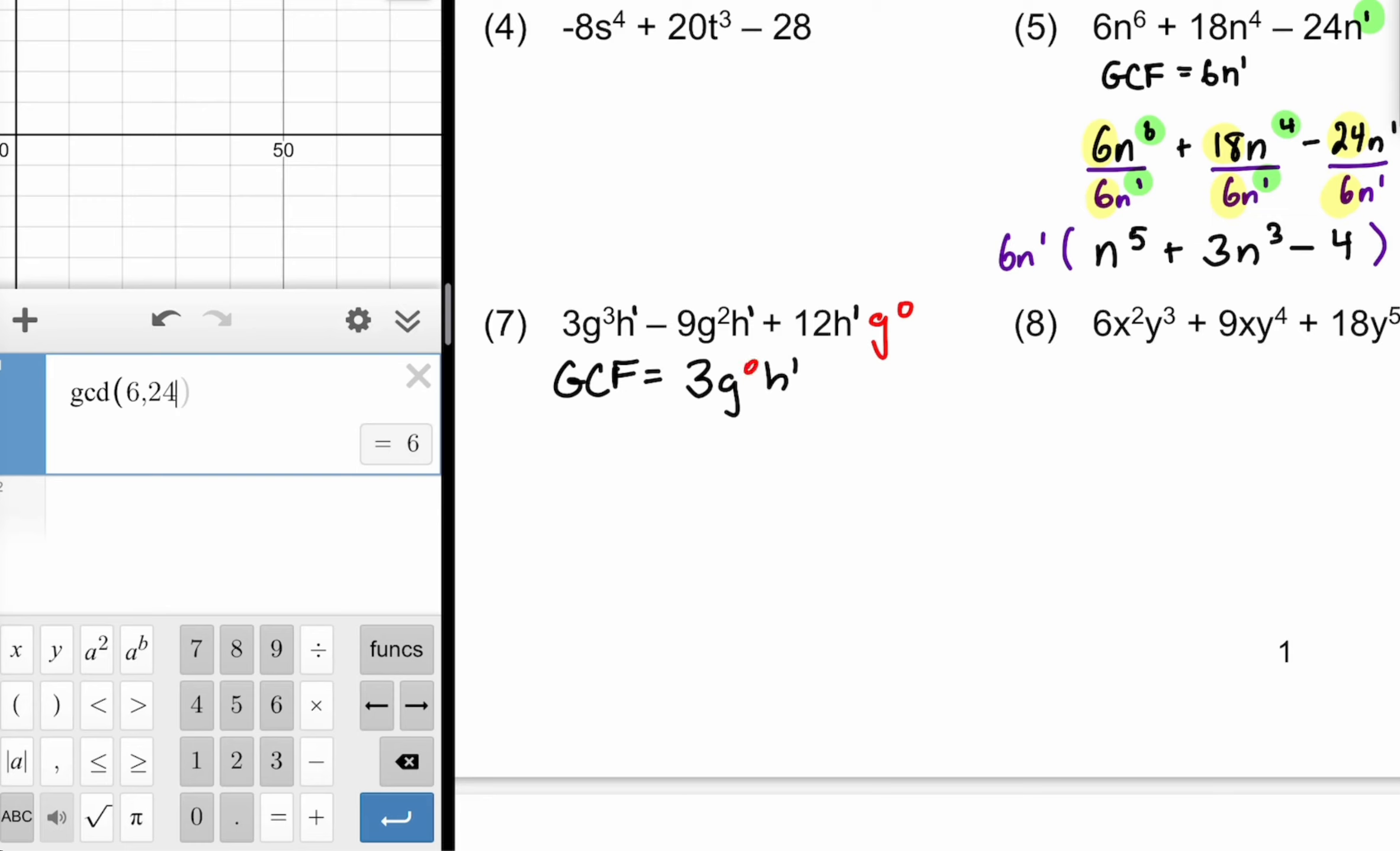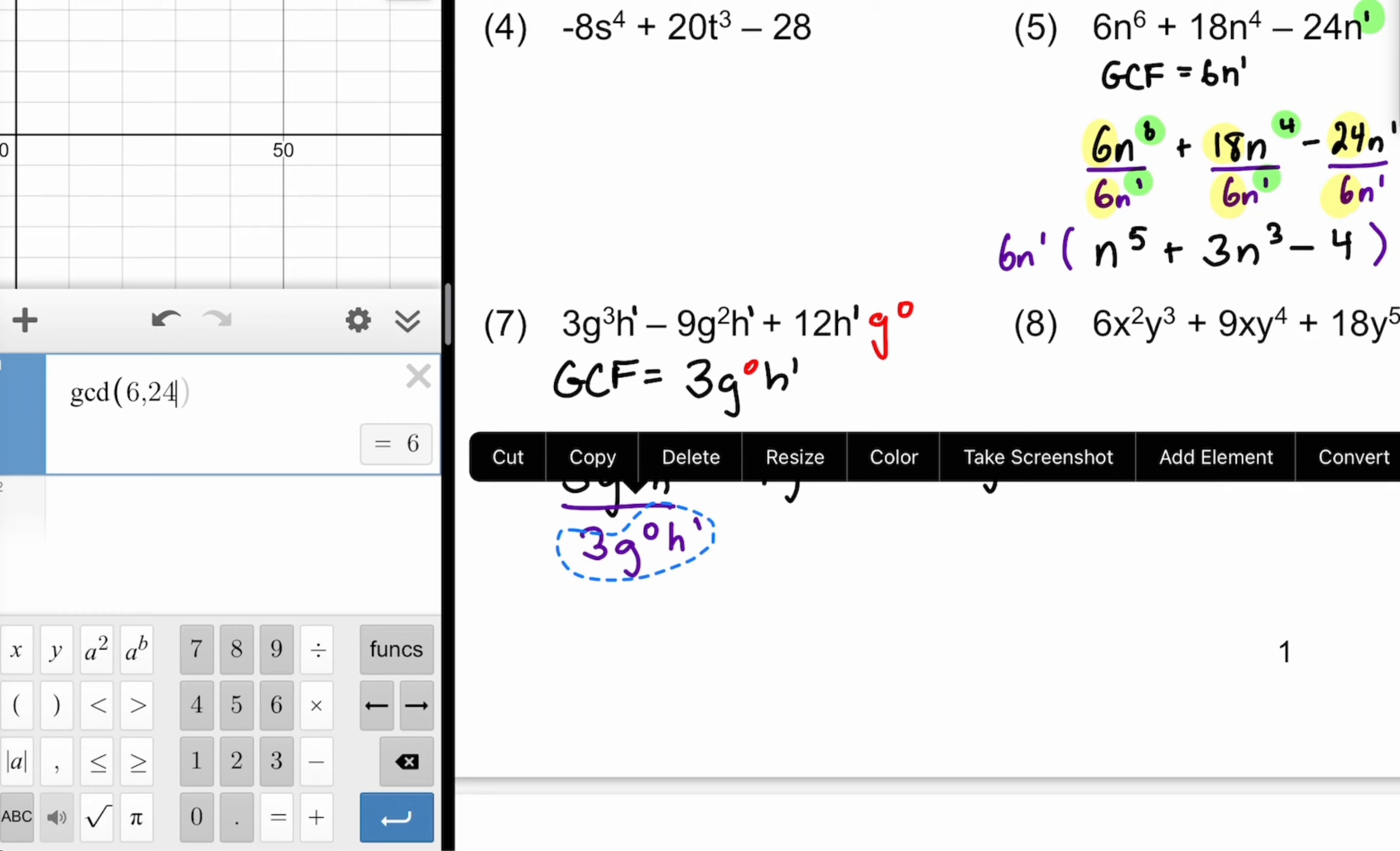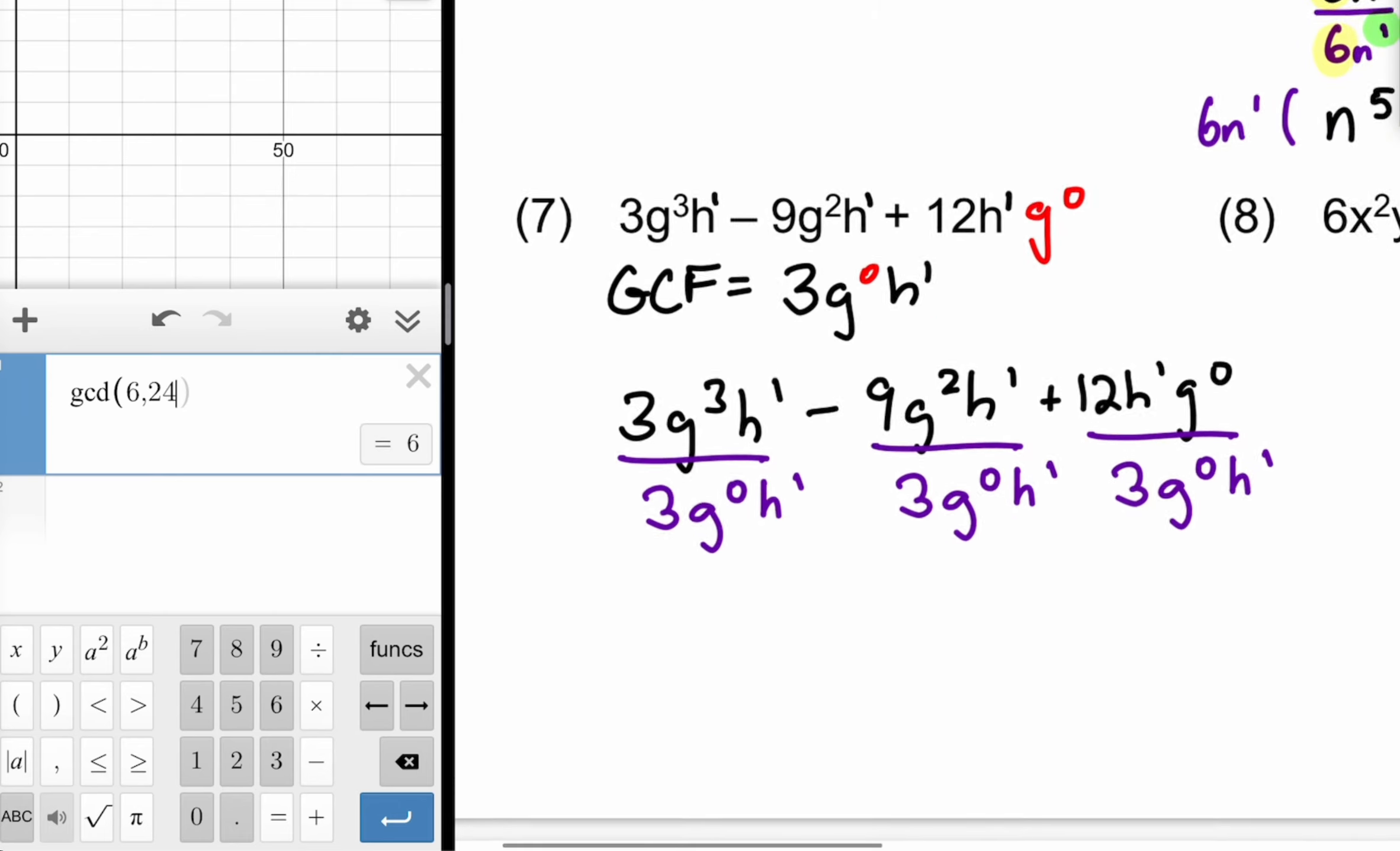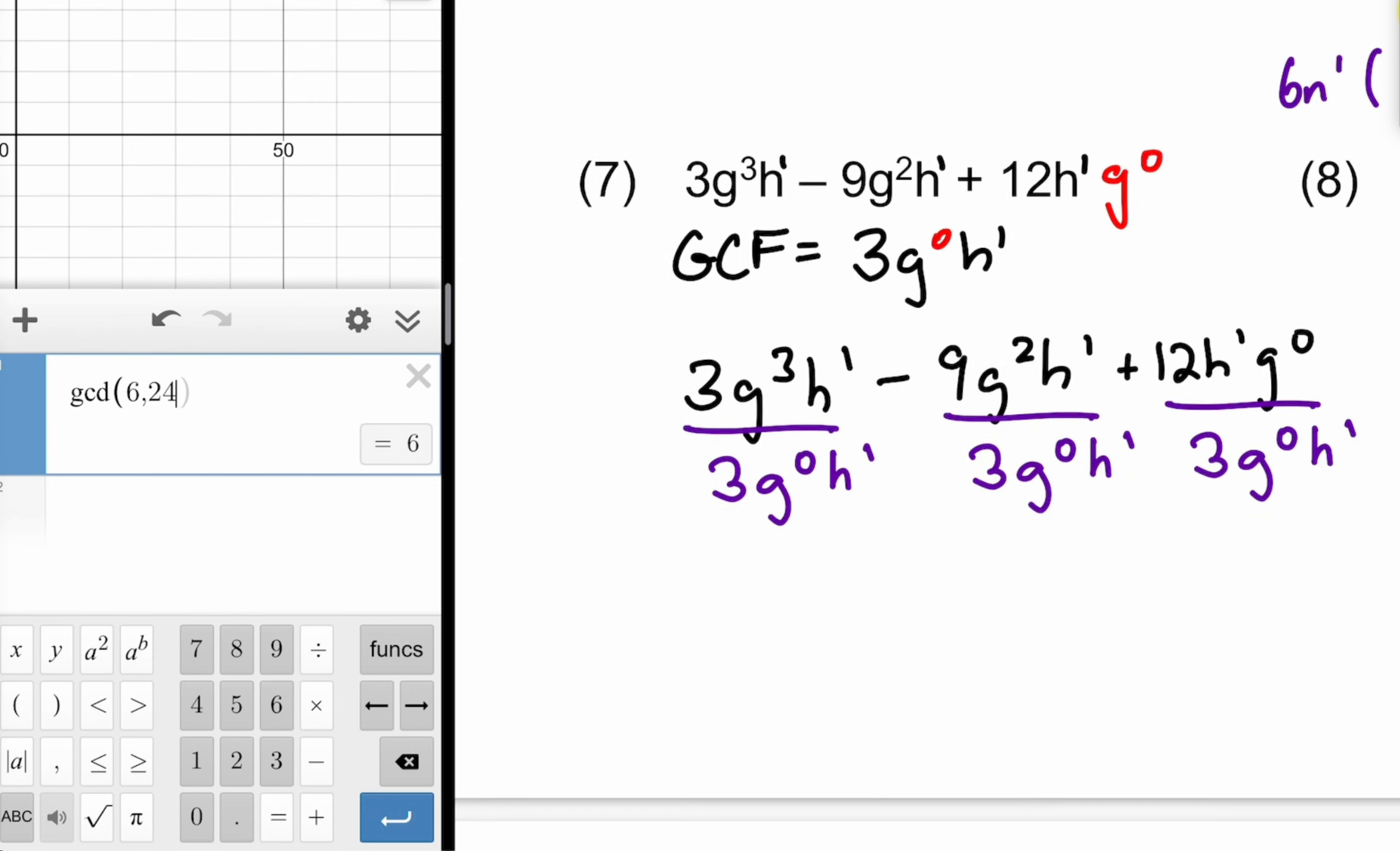But I'd look at it and say well G to the zeroth. What does that really amount to? Well it's the same as saying one. So it's not going to affect any change. So I'm looking at 3G³H¹ minus 9G²H¹ plus 12H¹G⁰. Each term divided by 3G⁰H¹. And you may look at it and say well I'm not going to put the G to the zeroth in there because it's really just a 1 anyway. I like to put it in there because it's a reminder of the whole keep the base subtract the exponent idea for every single term. Every variable in every term. So you know we simplify it after the fact but at least going through the process it's not a bad idea to have it there.